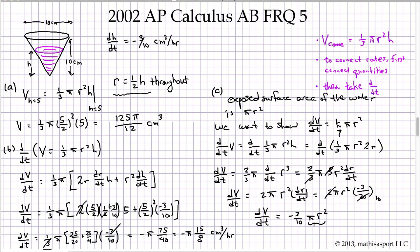Since pi r squared is the exposed surface area, dV/dt equals negative three-tenths times the surface area. This confirms that dV/dt is directly proportional to the exposed surface area, with the constant of proportionality being negative three-tenths.